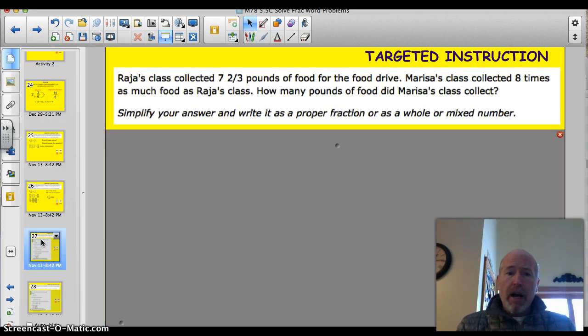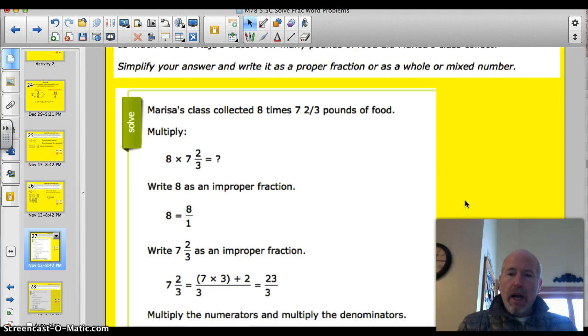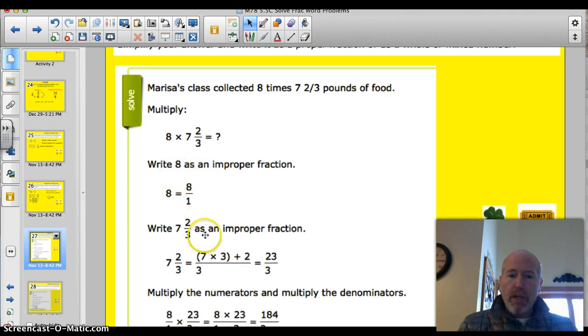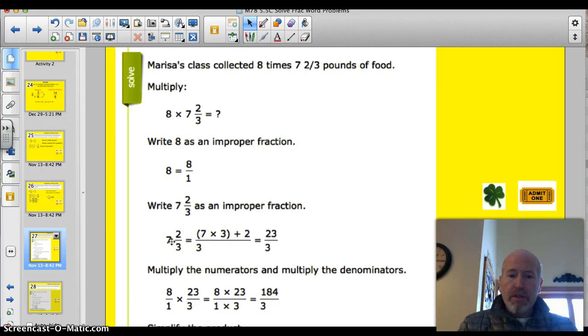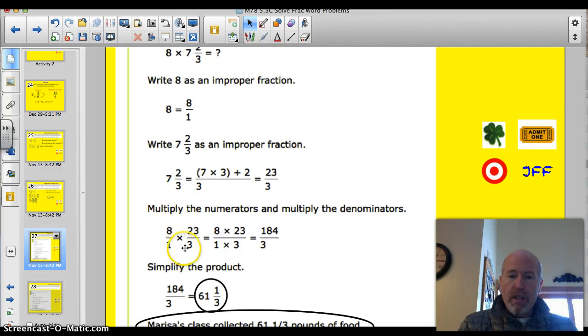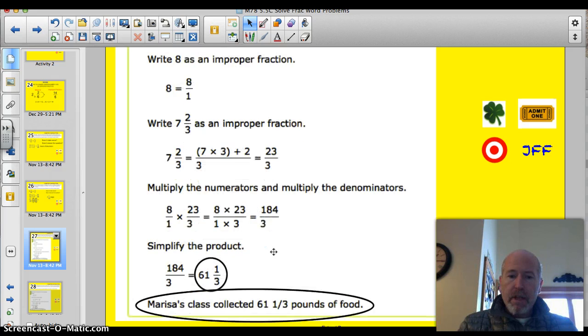Trying for you to try a couple on your own. Rajah's class collected 7 and 2 thirds pounds of food for the food drive. Marissa's class collected 8 times as much food as Rajah's class. How many pounds of food did Marissa's class collect? Simplify your answer. Write it as a proper fraction or as a mixed number. Go ahead and give this a shot. Pause it. Let's see how you did. Well, you had to multiply 8 times 7 and 2 thirds. You have to write 8 as an improper fraction. You put 8 over 1. Here, they're showing you how to change 7 and 2 thirds into an improper fraction. So, 7 times 3 is 21. Plus 2 is 23 thirds. So, now you've got it rewritten here. You've got 8 over 1 times 23 thirds. Multiply straight across. 184 thirds. If you divide that out. 61 and 1 third. But, that's not the answer, is it? Here's the answer in the oval. 61 and 1 third pounds of food that Marissa's class collected. Make sure you answer the question.